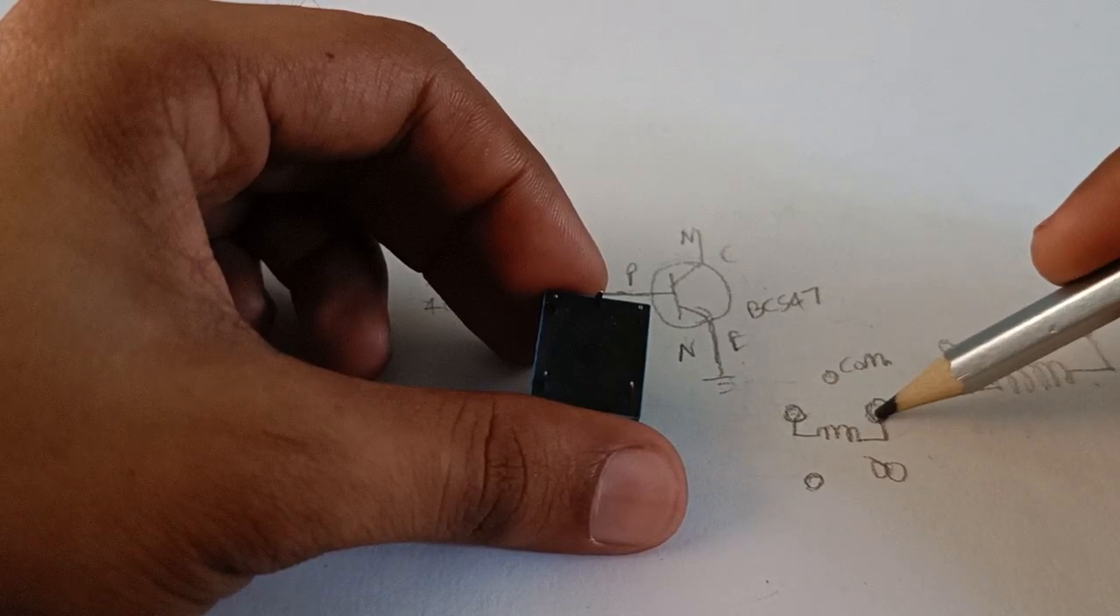The base of the transistor will be given to the microcontroller. Before that, let's draw the pin diagram of a relay. It's a 5-pin device. The top one is the common, these two pins are connected to a coil. This coil is an electromagnet—insulated copper wire wound around a ferromagnetic material.